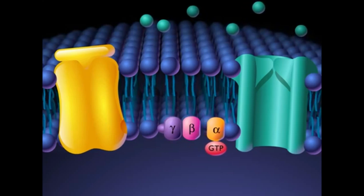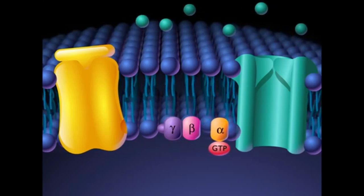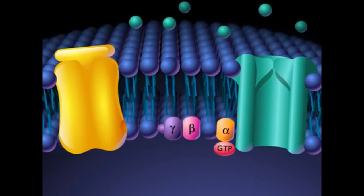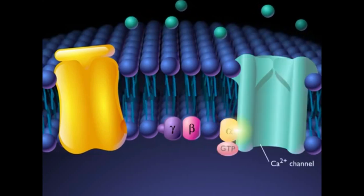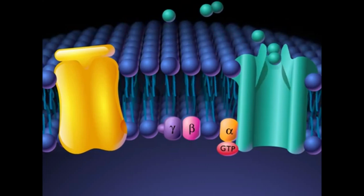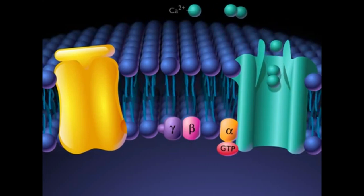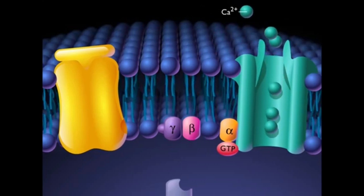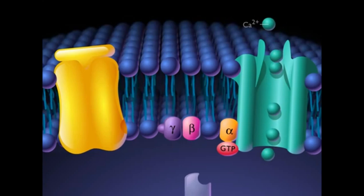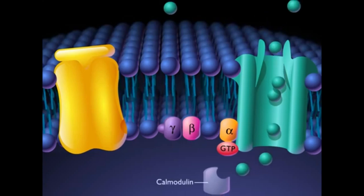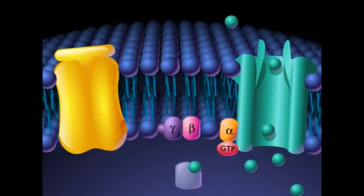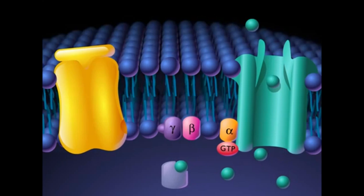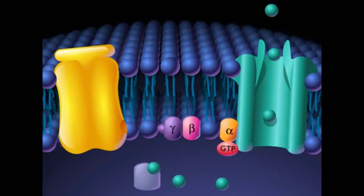The alpha subunit, with guanosine triphosphate attached, binds to the calcium ion channel, causing the calcium ion channel to open. Calcium ions diffuse into the cell and combine with calmodulin. The combination of calmodulin and calcium produces the response of the cell to the ligand.